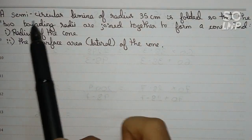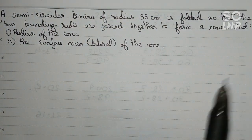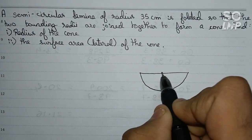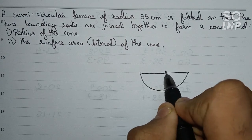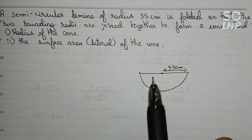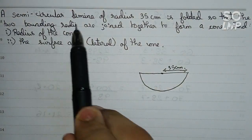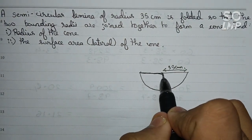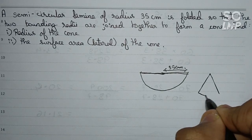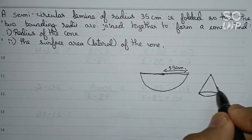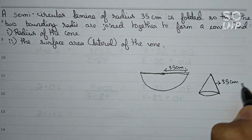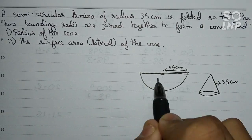It is provided that a semicircular lamina has radius 35 centimeters — if we draw a lamina like this, this will be the center of the circle and this distance equals 35 centimeters. Now, when this is folded to form a cone by joining the two radii, the slant height of the cone will be equal to 35 centimeters, which is the radius of the semicircle.